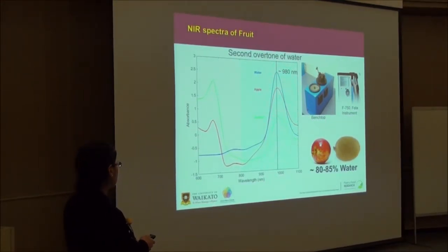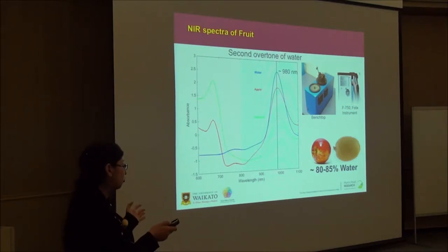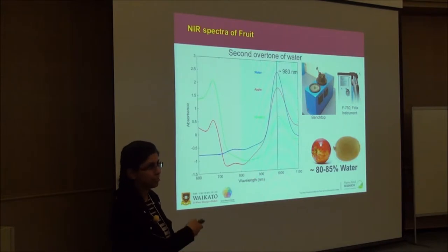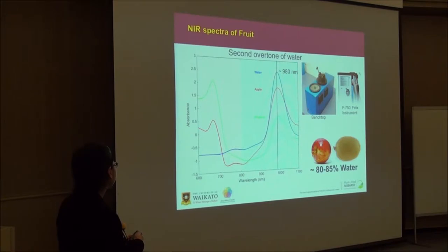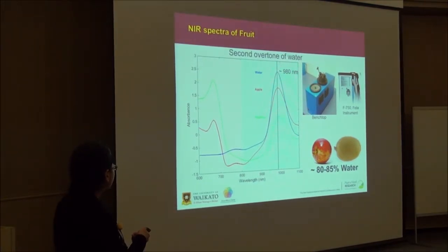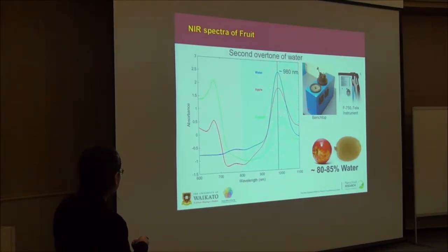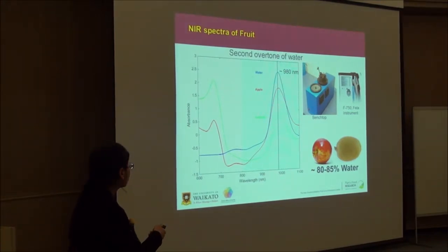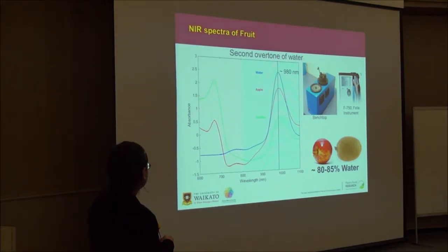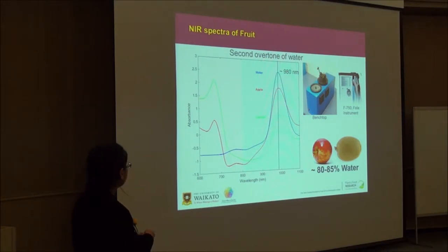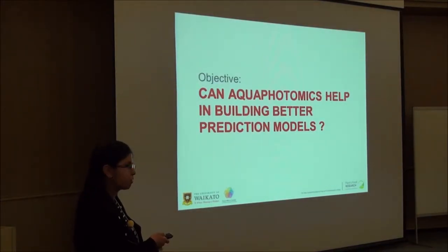We have put some instruments in our organization — the Phoenix instrument and the bench-top, which is a very large instrument weighing 15 kg, so we can't take it into the orchard for measuring dry matter or brix. These are NIR-based instruments. Using these instruments in the second overtone region of water, apple also shows the same water peak spectra at around 975-980 nanometers. This is because 80 to 85% of produce is water. So we thought, can aquaphotomics improve our prediction models?